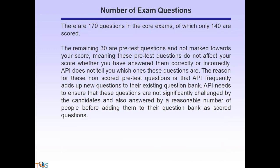Of the 170 questions, 140 are scored and the remaining 30 are pre-test questions that do not affect your score regardless of whether you answer them correctly or incorrectly. API does not tell you which questions are scored or non-scored. The reason for these non-scored pre-test questions is that API frequently adds new questions to their question bank and needs to ensure these questions are not significantly challenged and are answered by a reasonable number of people before adding them as scored questions.